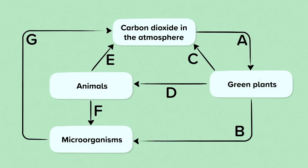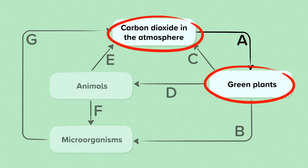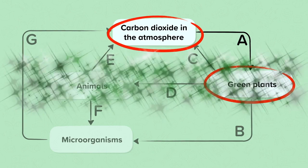In an exam, you might see an even more simplified version of the carbon cycle. If you check where the carbon is coming from and where it is going, you can work out the process. For example, process A: the carbon is starting as carbon dioxide in the atmosphere and is going into green plants. Which process removes carbon from the atmosphere into green plants? Photosynthesis.